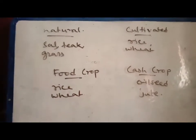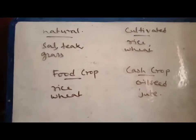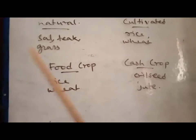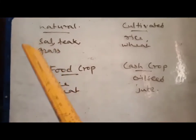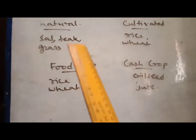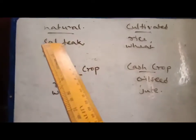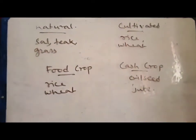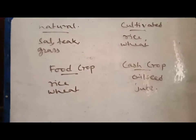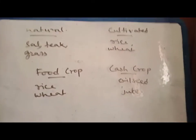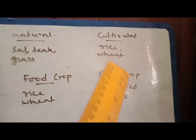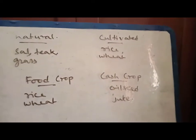Natural means we get trees naturally — like sal, tea, grass — all these we get in the natural process. But when it is man-made, that means when we are cultivating things, we get rice, wheat, jute, and like that.